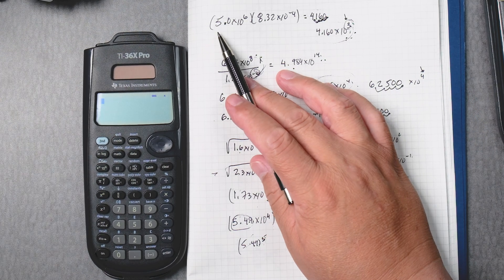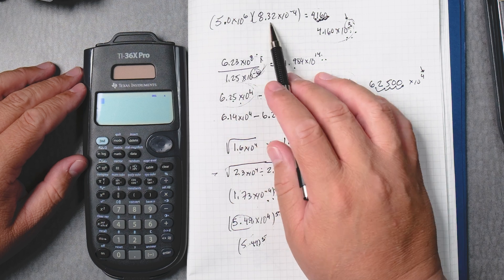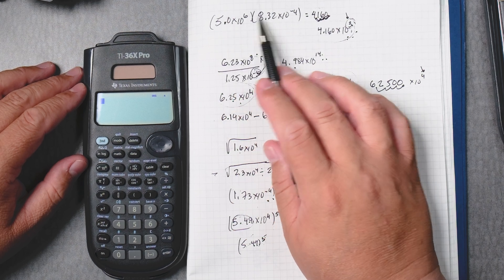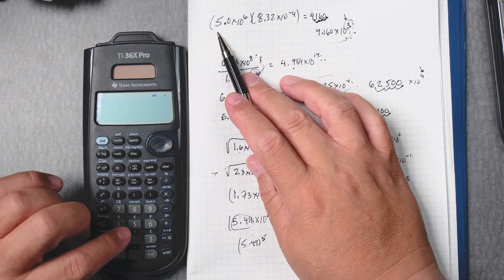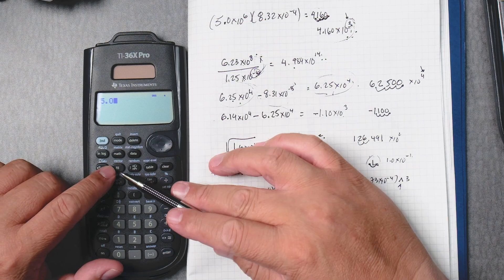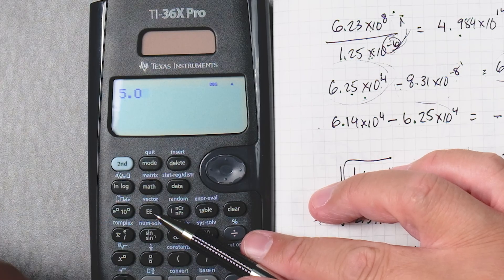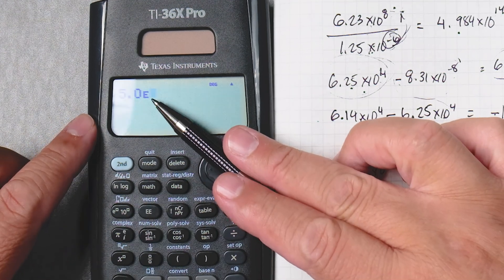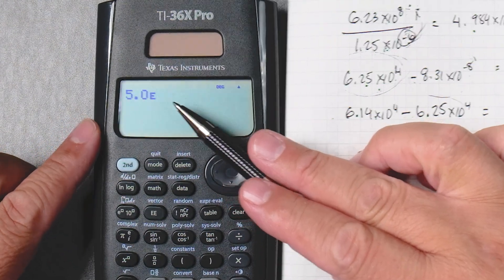So let's multiply these two scientific notation numbers. 5.0, and then the EE button is right here. You can press that and it gives you E right here on the screen.